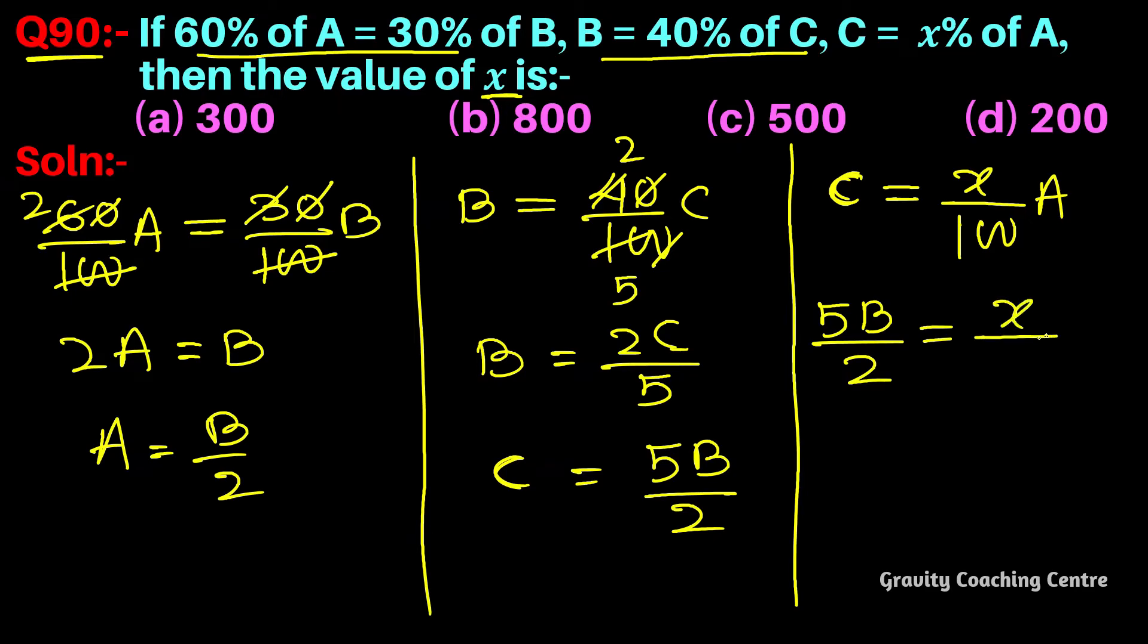X upon 100, A is B by 2. Two and two cancel, B and B cancel with cross multiplication, so x equals 500, which is the required answer. So option C is the correct answer.